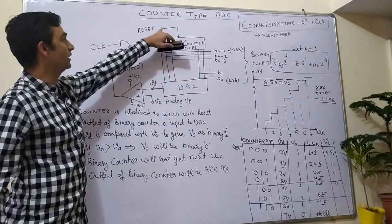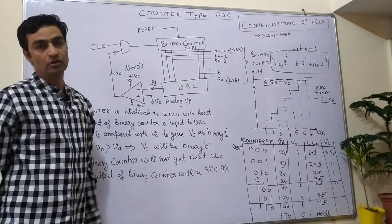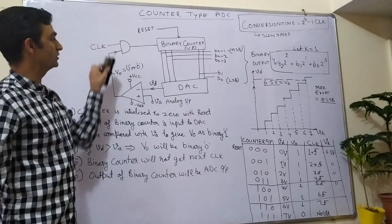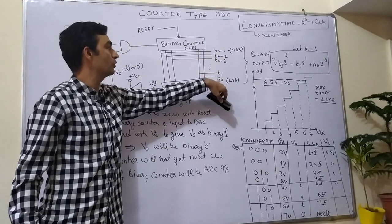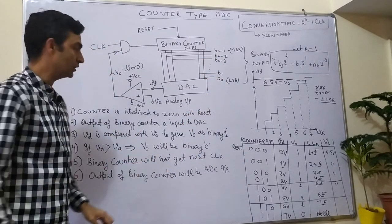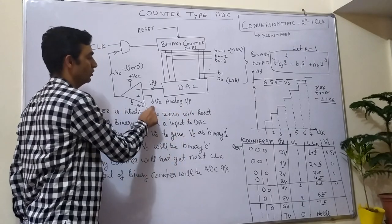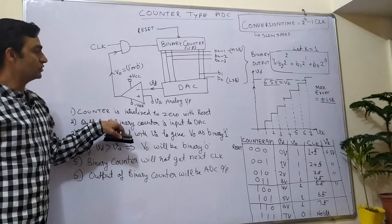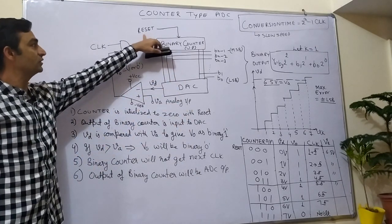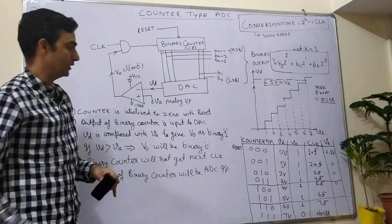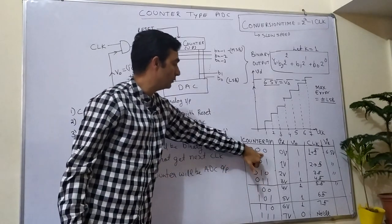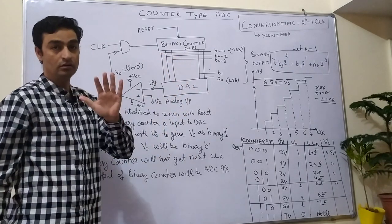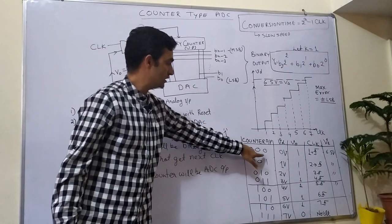This is the reset pin. Whenever the reset pin is applied, the output of the binary counter goes to 000. The counter output is basically the output of the analog to digital converter, and the input to the DAC comes from the counter. To understand the functionality, the counter is initialized to 0 with the reset pin. In this example we are using a 3-bit counter, so the initial output is 000.